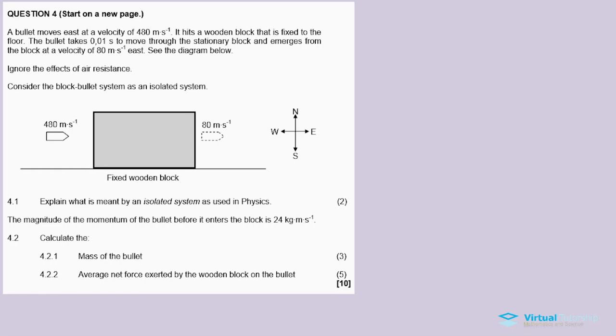Question four: A bullet moves east at a velocity of 480 meters per second. It hits a wooden block that is fixed to the floor. The bullet takes 0.01 seconds to move through the stationary block and emerges from the block at a velocity of 80 meters per second east. See the diagram below.